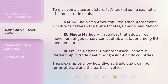To give you a clearer picture, let's look at some examples of famous trade deals. NAFTA — the North American Free Trade Agreement, which was between the United States, Canada, and Mexico. The EU Single Market — a trade deal that allows free movement of goods, services, capital, and labor among EU member states. RCEP — the Regional Comprehensive Economic Partnership, a trade deal among Asia-Pacific countries. These examples show how diverse trade deals can be in terms of scale and the parties involved.